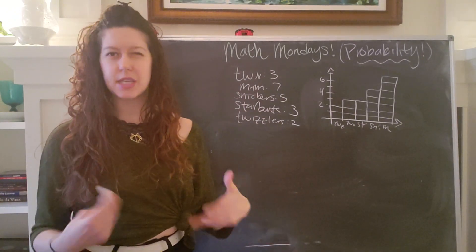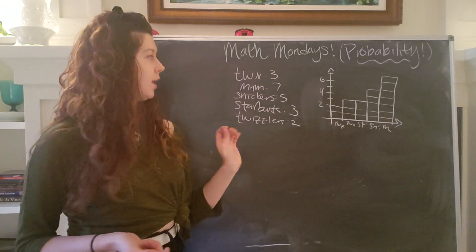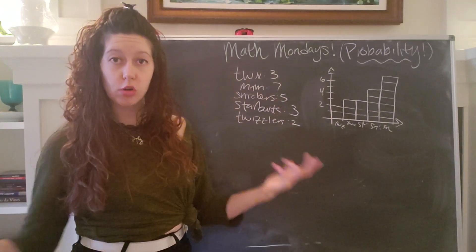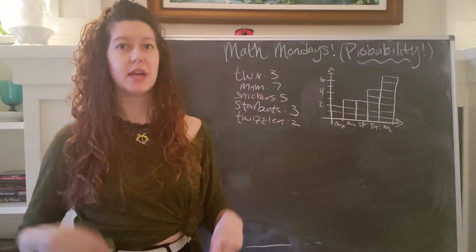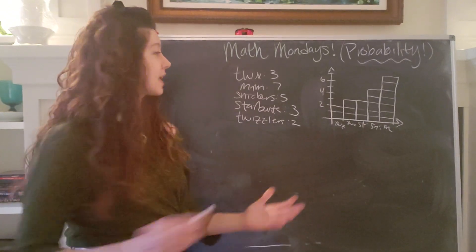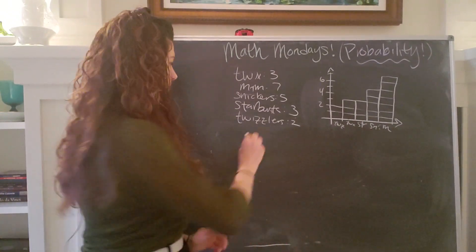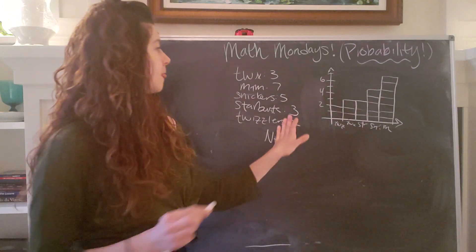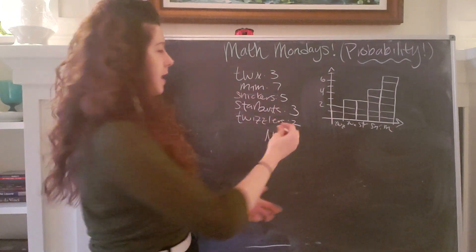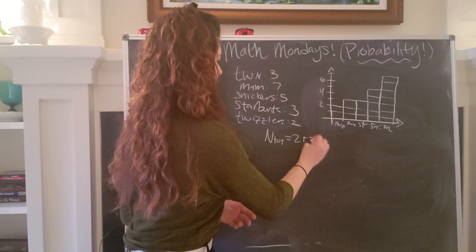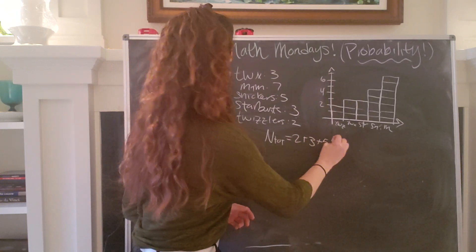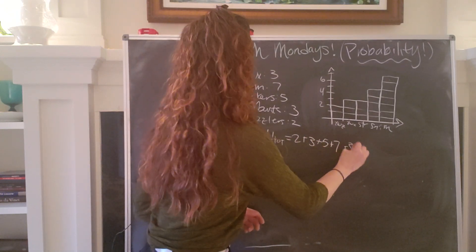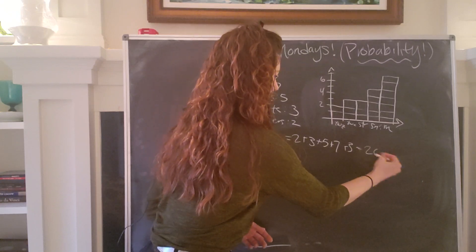In dealing with probability, typically the first thing that you're going to want to do is add up all of the total number of things that you're dealing with. So in this case, we are dealing with pieces of candy. So the total number of pieces of candy is just the sum of all of them. So we have two Twizzlers plus three Starburst, plus five Snickers, plus seven M&Ms, plus three Twix, which is going to equal 20.